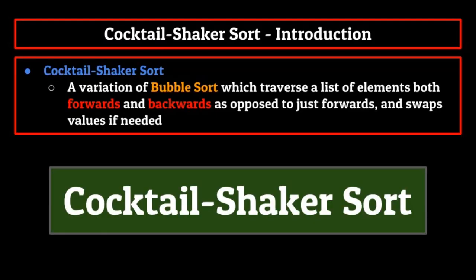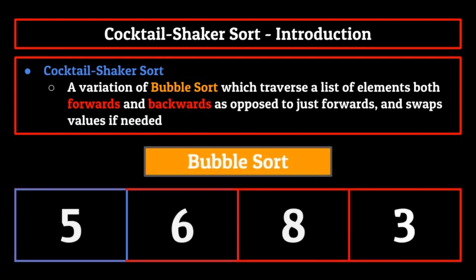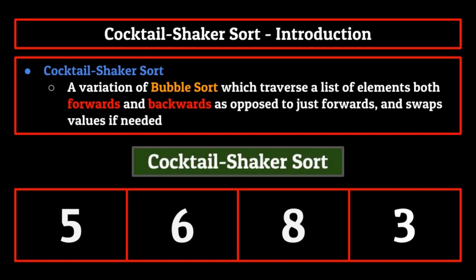Cocktail shaker sort, by definition, is a variation of bubble sort which traverses a list of elements both forwards and backwards as opposed to just forwards, and swaps values if needed. If we look at how bubble sort traverses through a list, you can see that it starts at the beginning and makes its way to the end before starting at the beginning yet again. In contrast, cocktail shaker sort goes back and forth between the first and last element in the dataset, like a game of computer science ping pong.